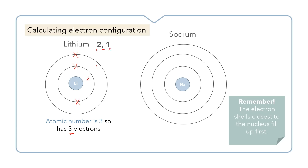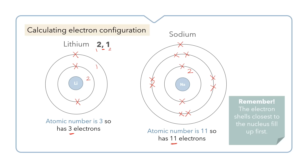Sodium has an atomic number of 11, so it has 11 electrons. We start from the first shell, which holds up to two, so we place two electrons there. The second shell can hold up to eight, so we place eight there, bringing our total to ten. But sodium has 11 electrons, so we need to add one extra electron in the third shell. Our electron configuration of sodium is 2,8,1.